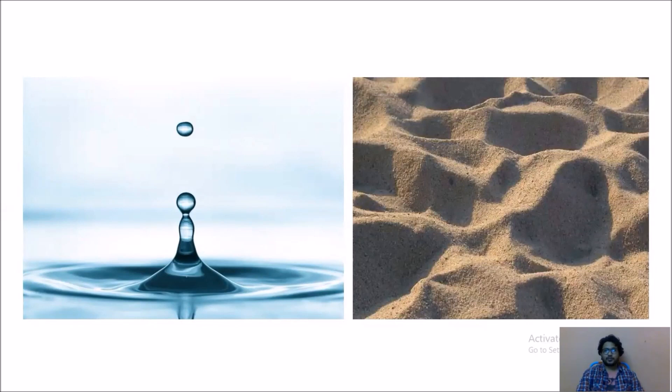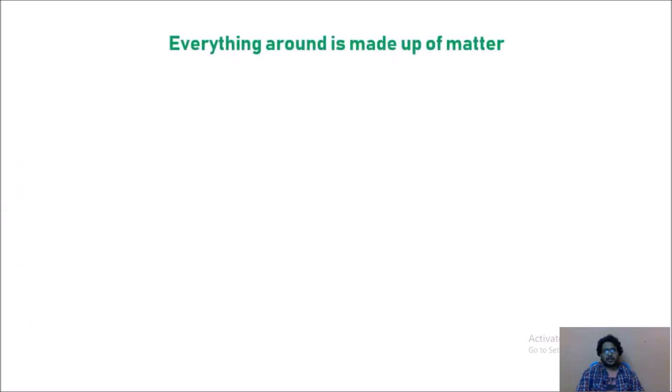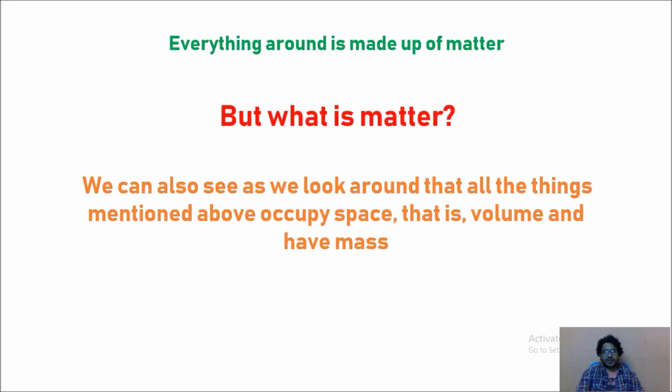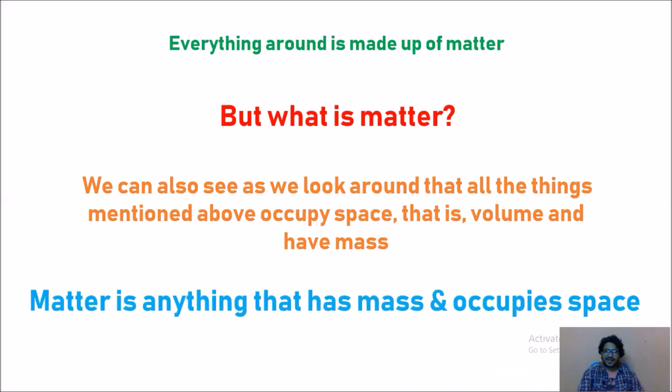Everything around is made up of matter but we have a question: what is matter? We can see that all things mentioned above occupy space, that is volume, and have mass. So matter is anything that has mass and occupies space.